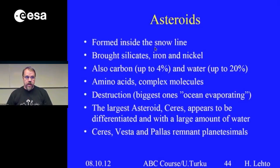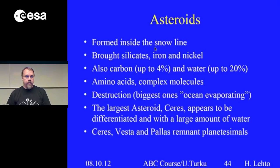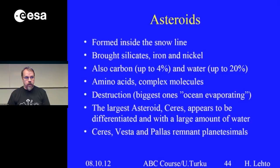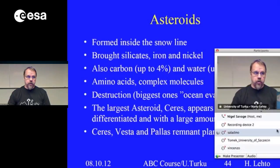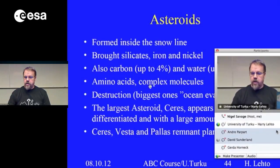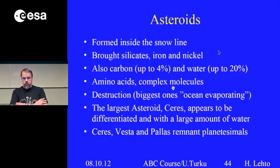During those times, when asteroids and comets hit the Earth, although they had destructive power, they were also important in bringing down the necessary ingredients for life to form. Asteroids formed inside the snow line brought us silicates, iron, and nickel — rock-like ingredients. Carbon and water also came with asteroids: some meteorites have up to 4% carbon and water up to 20%. Amino acids and complex molecules have been found, for example, on the Murchison meteorite — so these are also found in space.